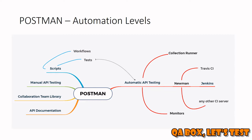The collection runner is the Postman UI from where you execute your complete collection. What Newman offers is whatever you can achieve through the collection runner using the UI, you can achieve the same using the command line with the help of Newman.